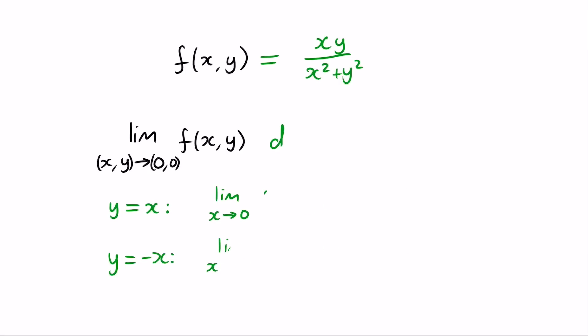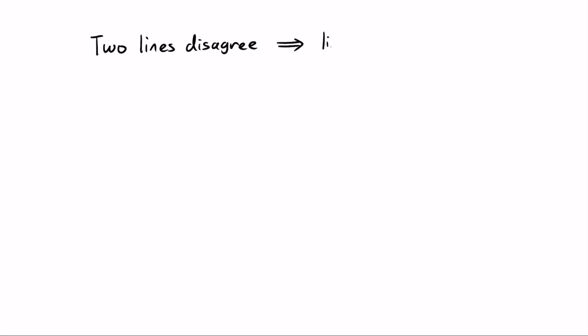Now this is where a lecturer would normally say, be careful, you can use this method to show that a limit doesn't exist, but you can't go the other way. You can't check different directions and show they are the same in order to prove that the limit exists.